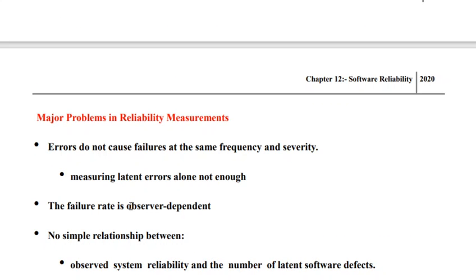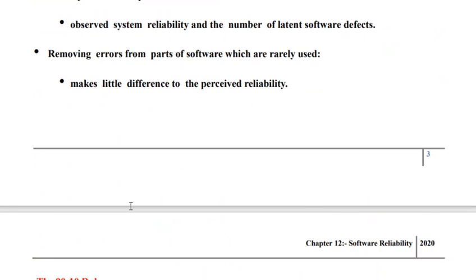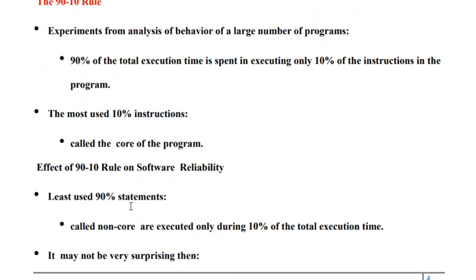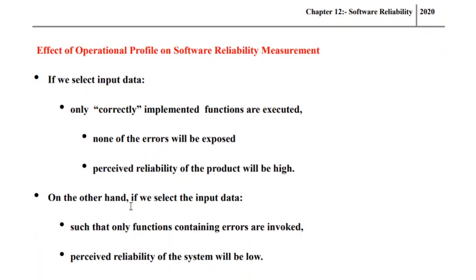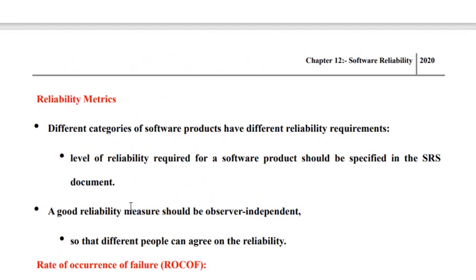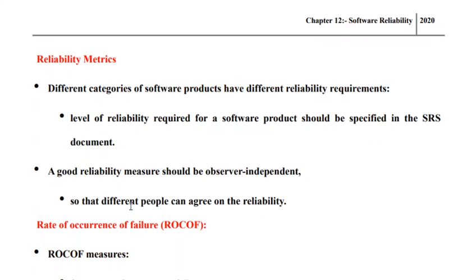We learned about the relation between reliability and error. We learned about major problems that may be associated with reliability measurements. We learned about the 90-10 rule and the effect of operational profile on software reliability measurement. And then we learned about reliability matrices, including rate of occurrence of failure, mean time to failure, mean time to repair, mean time between failure, probability of failure on demand, and availability.